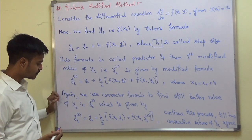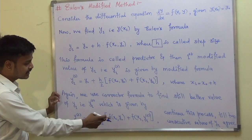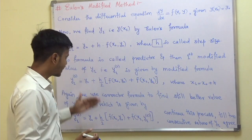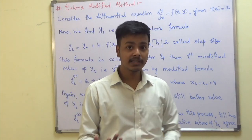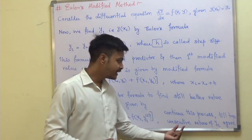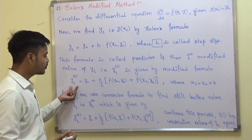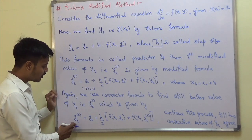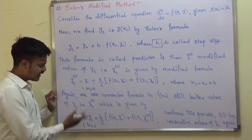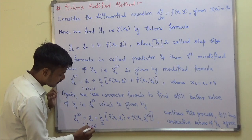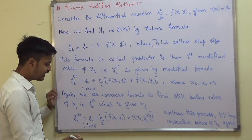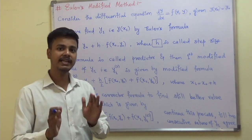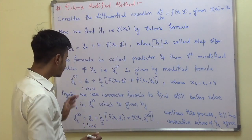You may ask: until when do we find all those corrected or approximate values like y1¹, y1², y1³, and so on? You have to continue this process until two consecutive values of y1 agree. For example, suppose y1¹ = 1.1025 and y1² = 1.1026. The difference is very negligible — 0.0001 — so we can terminate the process.